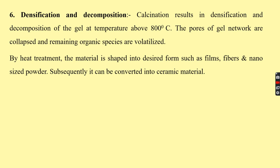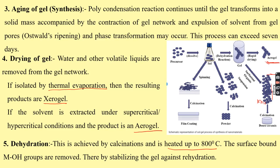Finally, the material is subjected to a densification process. Calcination results in densification and decomposition of the gel at temperatures above 800°C. The pores of the gel networks collapse, remaining organics are volatilized, and a powdered form of nanomaterial is obtained. By heat treatment, the material can be shaped into desired forms such as films, fibers, or nano-sized powder, and subsequently converted into a ceramic material.